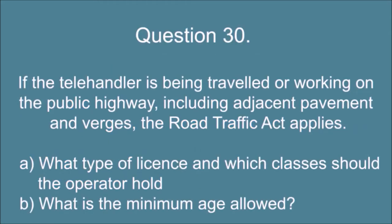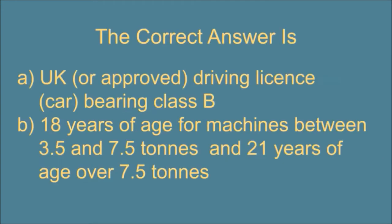Question 30. If the telehandler is being traveled or working on the public highway, including adjacent pavement and verges, the road traffic act applies. A. What type of license and which classes should the operator hold and B. What is the minimum age allowed? The correct answer is: UK or approved driving license bearing class B and 18 years of age for machines between 3.5 and 7.5 tons and 21 years of age over 7.5 tons.